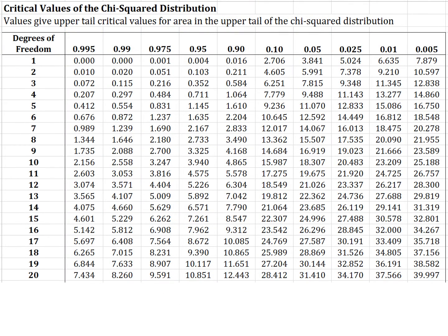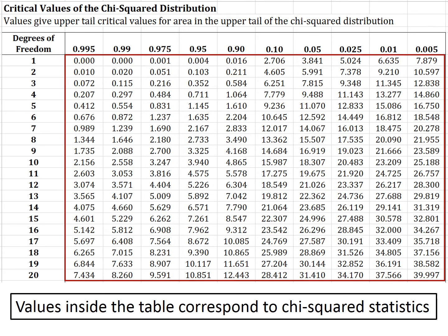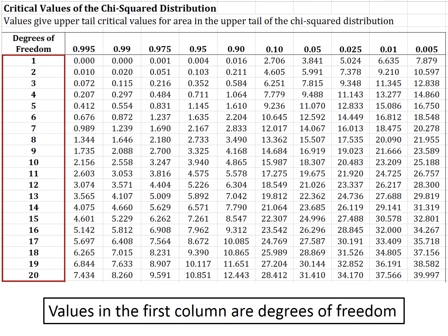Here's a first look at the chi-squared table. You'll notice a lot of similarities between this and the t-distribution. Just like the t-distribution, the values inside the table correspond to chi-squared statistics. However, unlike the t-table, the values inside the table continue to increase as we increase the number of degrees of freedom. The values in the first column, just like the t-distribution, give the number of degrees of freedom.